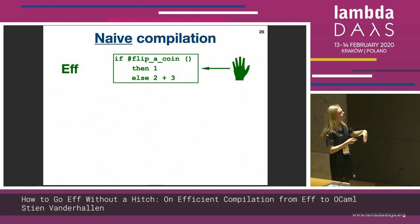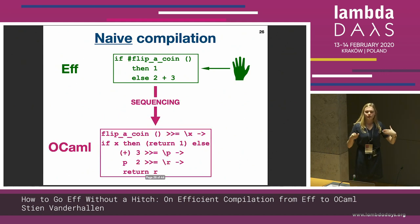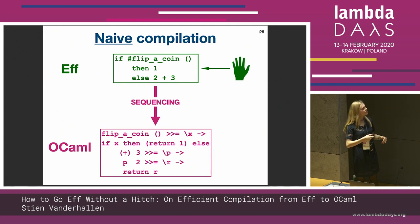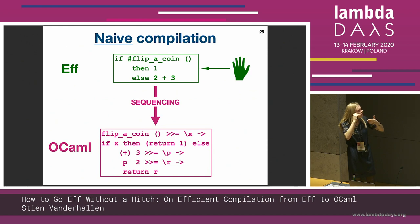We can just sequence this computation by using monadic bind operators in OCaml — just take each little part of the computation and execute it sequentially.